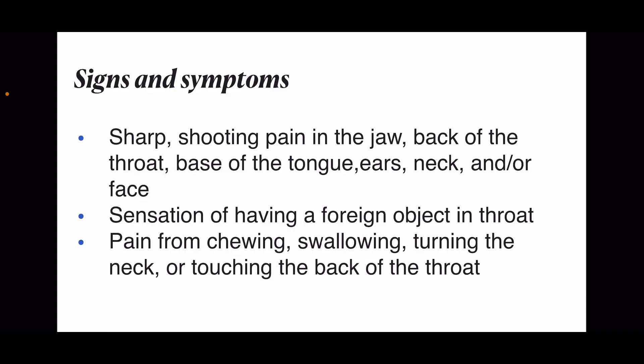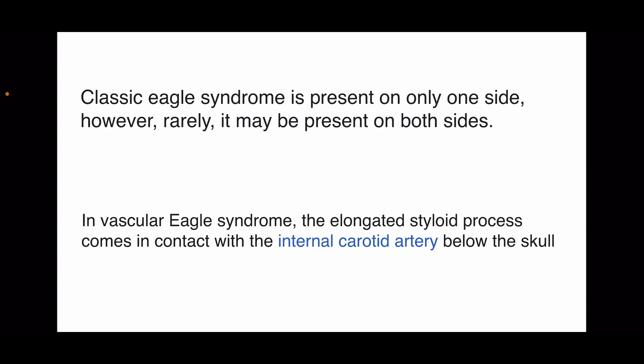The possible signs and symptoms include sharp shooting pain in the jaw, back of the throat, base of the tongue, ears, neck, and face; sensation of having a foreign object in the throat; pain from swallowing, turning the neck, or touching the back of the throat. Other symptoms include difficulty in swallowing and ringing or buzzing in the ears. The classic Eagle Syndrome is present on only one side, though rarely it may be present on both sides.